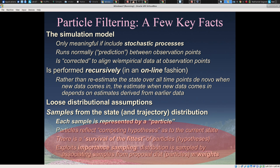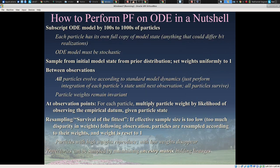We're getting a probabilistic estimate of the current state of the system. Each sample is represented by a particle. These particles reflect competing hypotheses as to what's currently going on. There's a survival of the fittest among them, where fitness is judged by how well they accord with empirical data. We're essentially running the model with all these different hypotheses about what's going on. The hypotheses that are consistent with the incoming data flourish and are multiplied; those that are inconsistent tend to die out. To achieve this, we make use of importance sampling — we sample from a distribution by particles that are associated with weights.